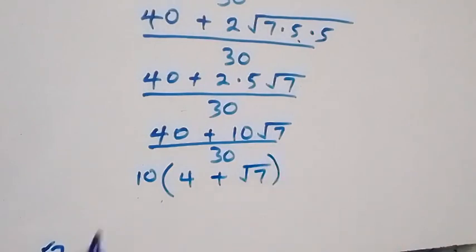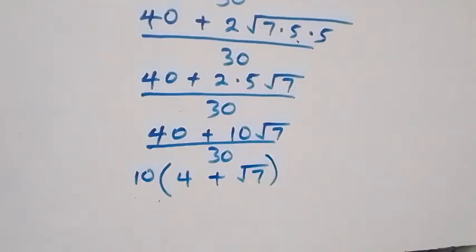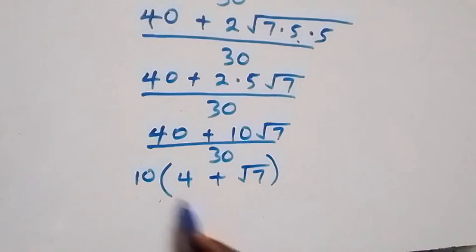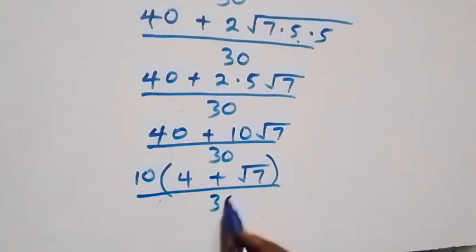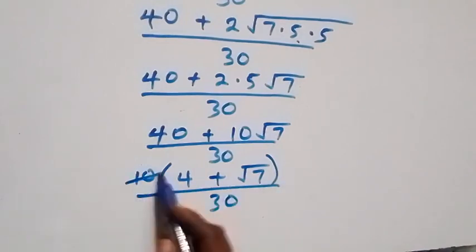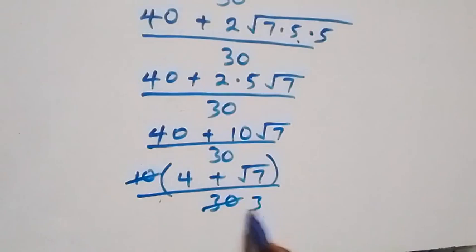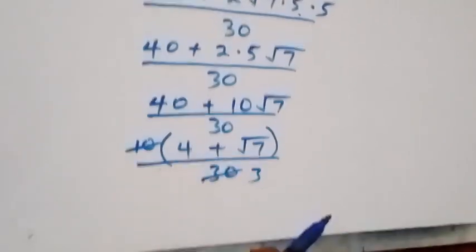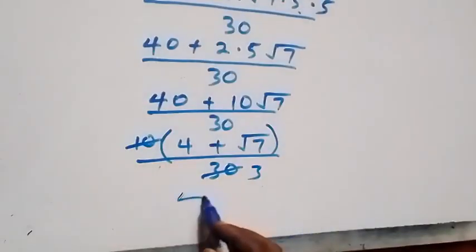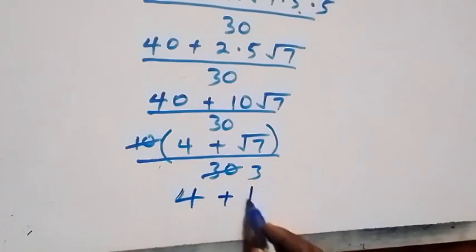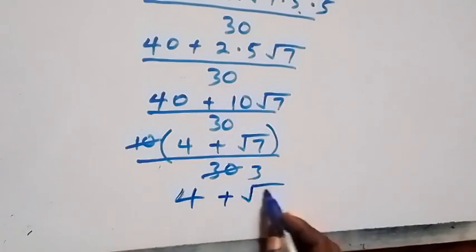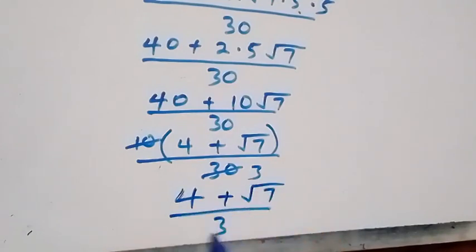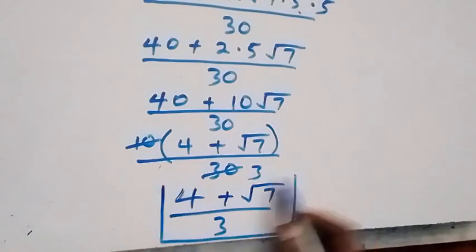Ten goes into 30 three times, so all we have left is (4 + √7) over 3, which is the same answer as the first method. So we can conclude that the result is (4 + √7) / 3.